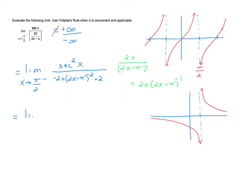So we have the limit as x approaches pi over 2 from the left, with secant squared of x in the numerator and negative 40 times (2x minus pi) to the negative 2 in the denominator. I don't like the negative exponent, so I'll also rewrite secant squared as 1 over cosine squared.